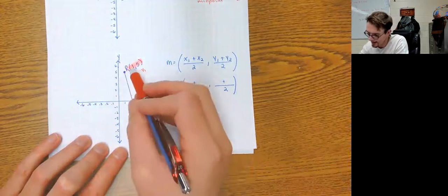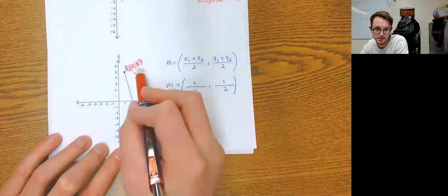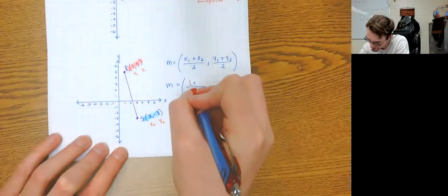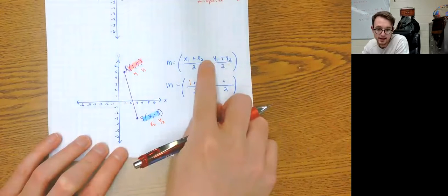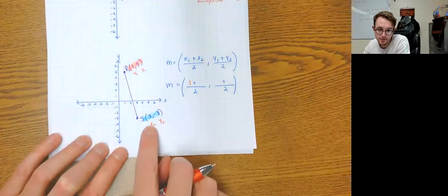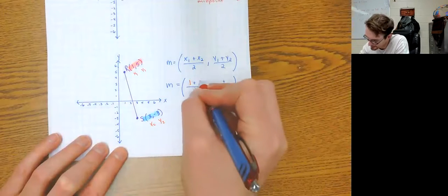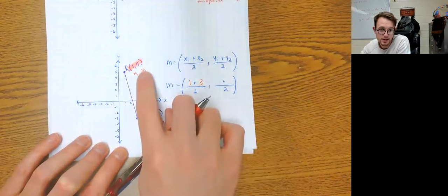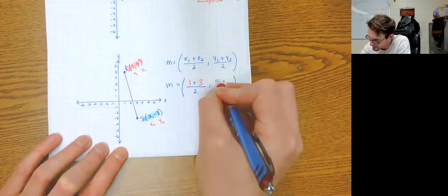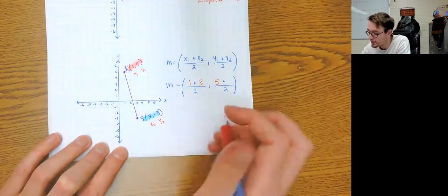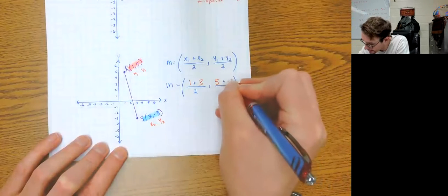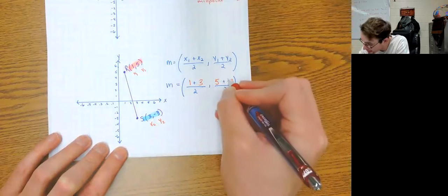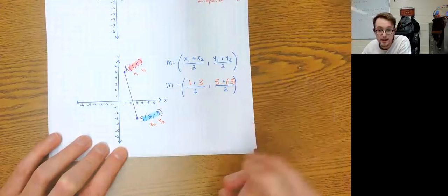So my x1 value — I'm going to substitute that in. My x1 value is 1, so I'm going to put a 1 right here. Then the next thing I substitute is my x sub 2 value. My x sub 2 value is 3. Now the next thing I do is my y sub 1 value, and that is 5. And then my y sub 2 value, which is negative 3. I'm going to put parentheses around this because it's plus a negative.